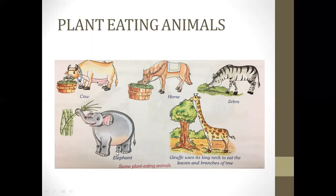Irrespective of the size, from a cow to an elephant, these animals eat only plants or plant products. They will never eat flesh even if they do not get any food to eat. That's why they are called plant eating animals.